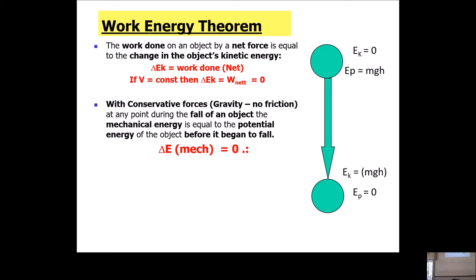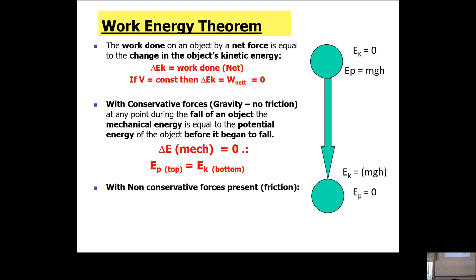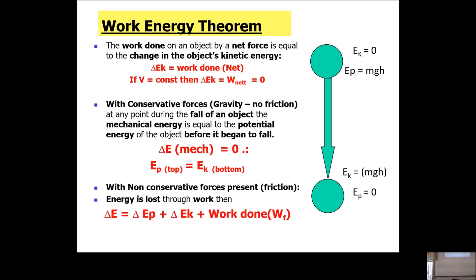With gravity, mechanical energy at the top equals potential energy before falling, so the change in mechanical energy is zero. With non-conservative forces — like friction — there will be a loss in mechanical energy equal to the work done by friction.